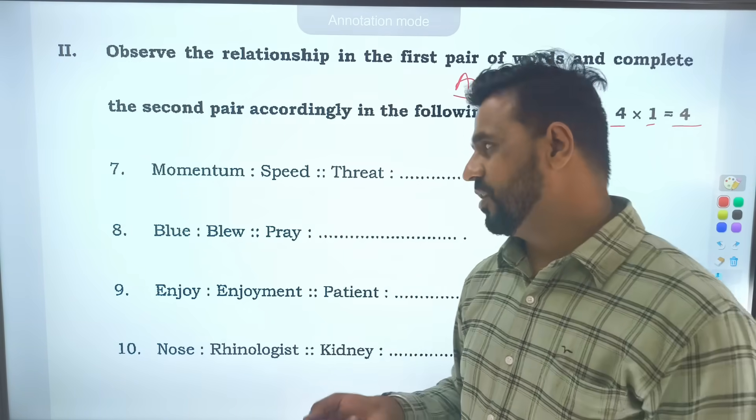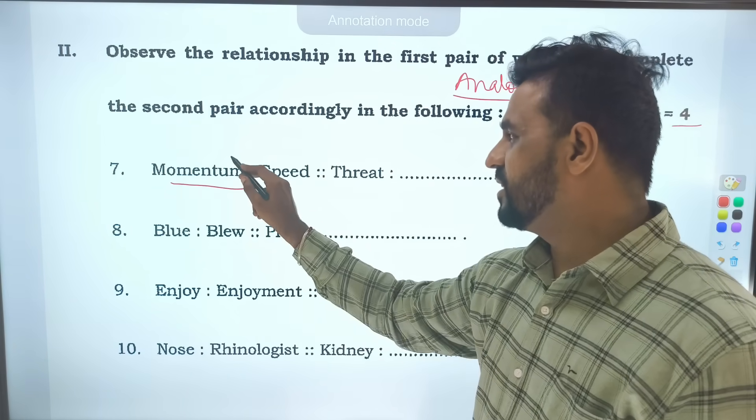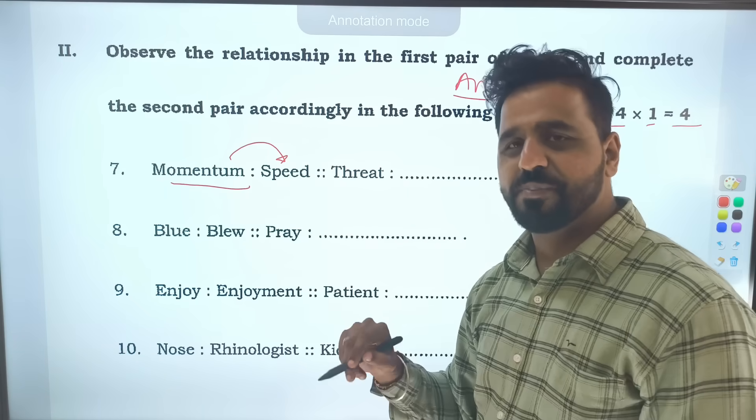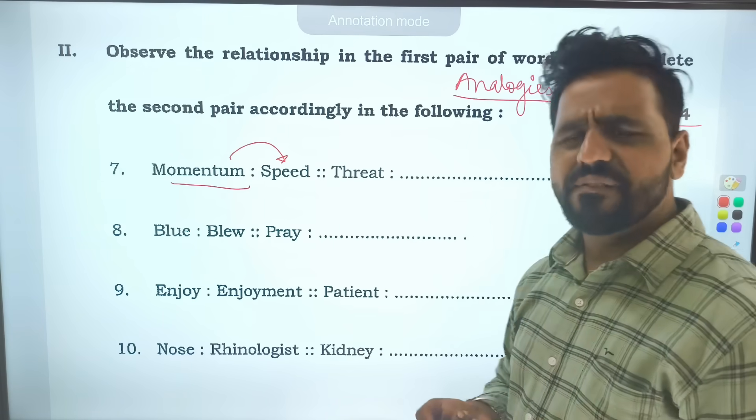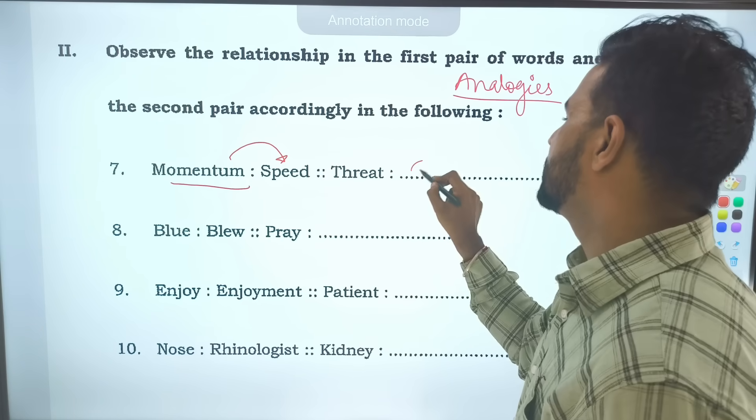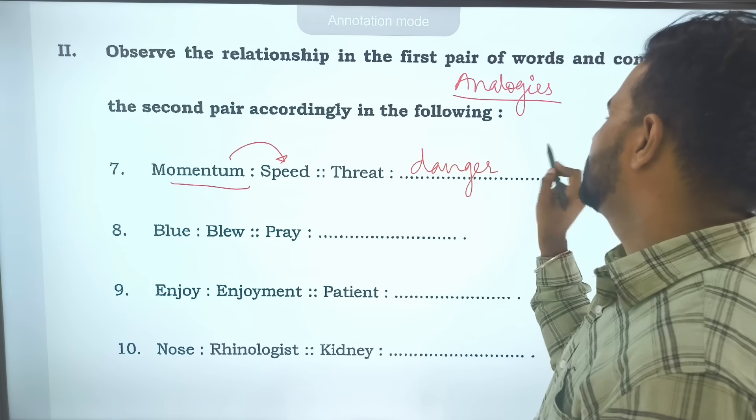Let us begin our discussion on the analogies. Momentum is - you should study the relationship between the first pair and you should answer the second one. Momentum is speed. What is the meaning of threat? Threat means danger. So the answer is danger.